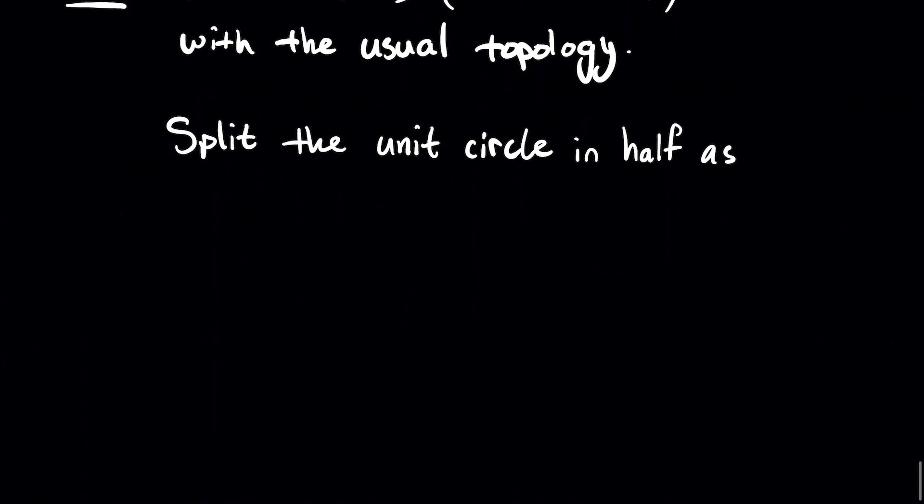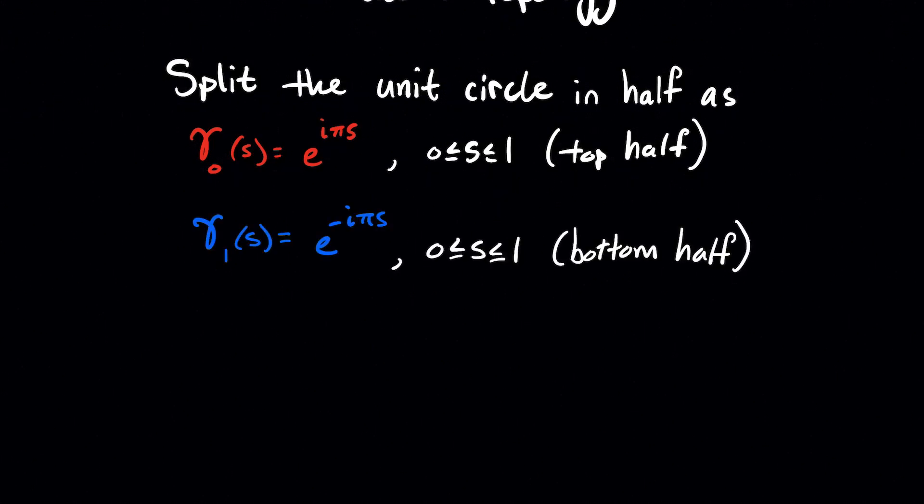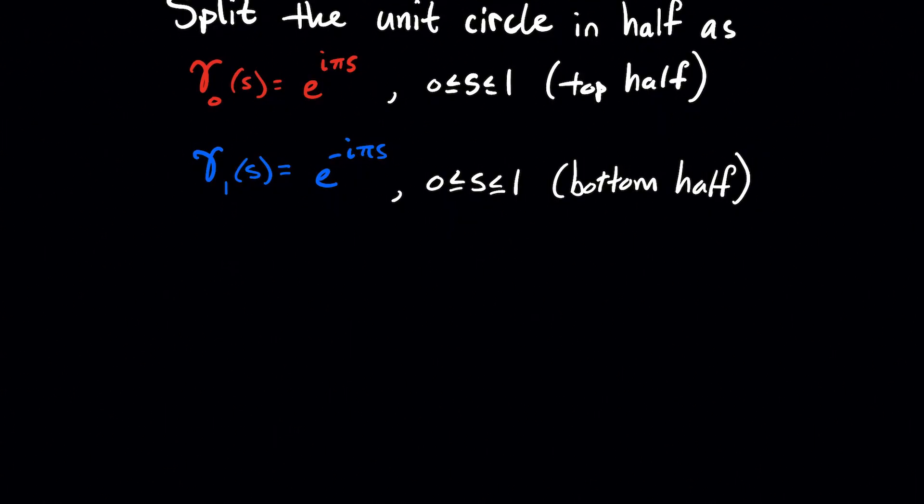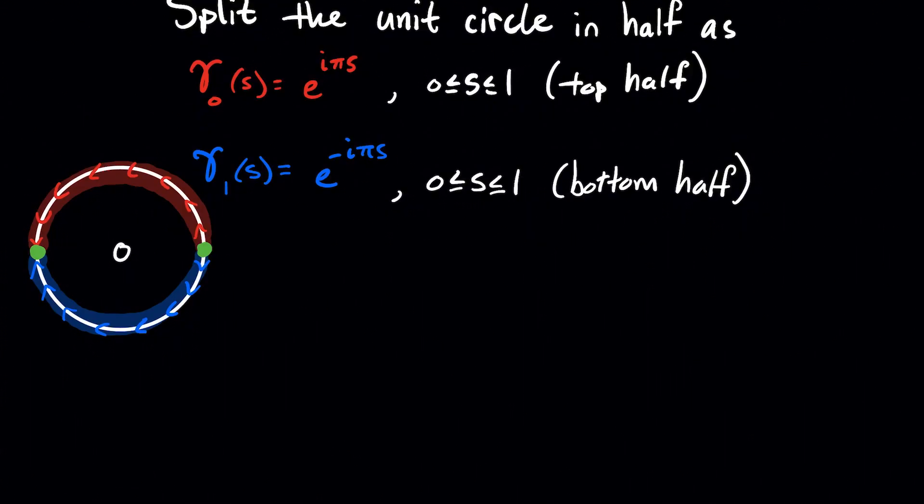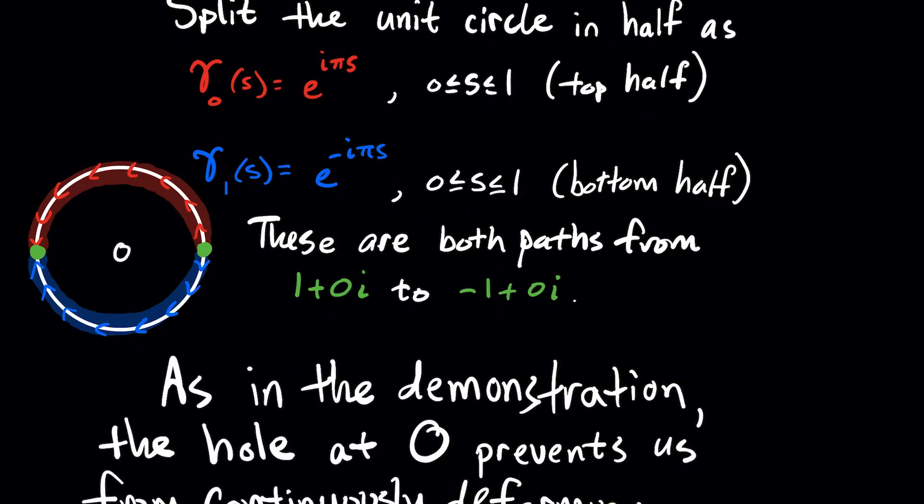So what we're going to do is we're going to take the unit circle and we're going to split it in half. And we're going to let the top half have equation determined by e to the i pi s. And by the way, the reason I'm really using complex numbers here is just sometimes curves are easier to describe. So in this case, this exponential is the nice top half of the unit circle. And the bottom half is going to be gamma one and it's going to be e to the minus i pi s. And in a picture, here we are. And what I want to consider these as is, well, these are both paths from 1+0i to -1+0i. And I've denoted both those points in green.